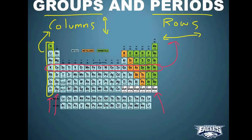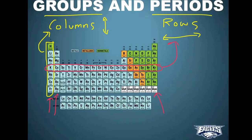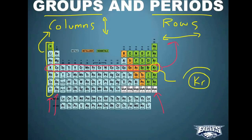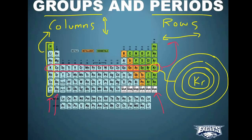The periods, on the other hand, are completely different. The periods tell you how many energy levels an atom has. So if I'm in period number four — you count from the top, one, two, three, four — that means I'm going to have four energy levels. Let's go with Krypton because it sounds cool and Superman-ish. Krypton, KR, is going to have four energy levels around it. So if I ever ask you to draw an energy level diagram or model an atom, you can start by drawing the number of energy levels, and then plot electrons after that.